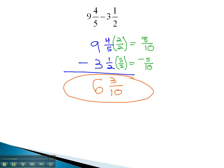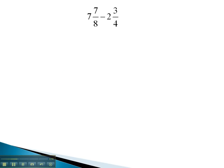Let's try this again with another example, subtracting, working from right to left. In this problem, we have 7 and 7 eighths, and we are subtracting 2 and 3 fourths. Again, we start with the fractions on the right, needing a common denominator.